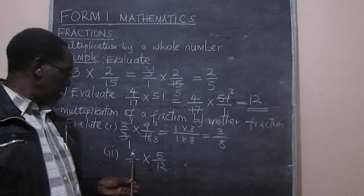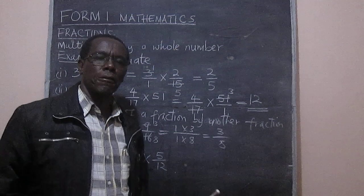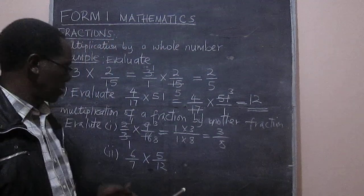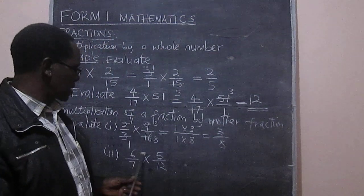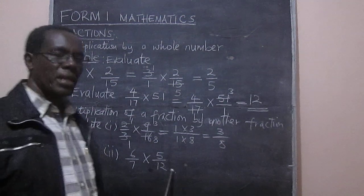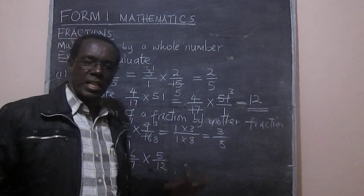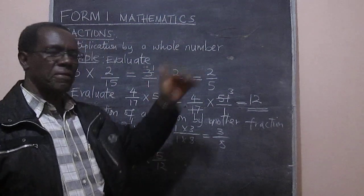We could as well multiply 6 by 5 to get 30 over 84 and simplify. We can say 6 multiplied by 5 to get 30 and 7 multiplied by 12 to get 84, so that will give us 30 over 84, and then we simplify that fraction.